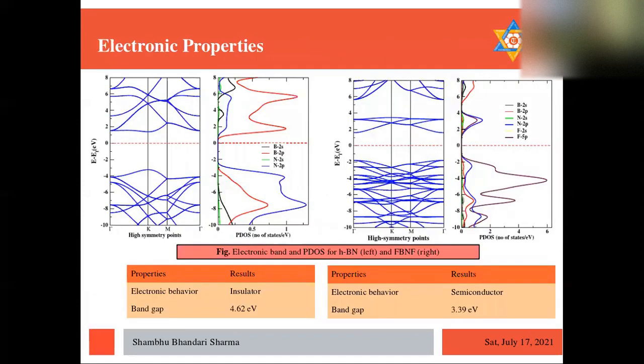And here is now the electronic properties. We can see the band and PDOS side by side here for both monolayers. We can see the electronic behavior of h-BN, which is insulator, is shifted into the semiconductor by reducing the band gap from 4.62 to 3.39 eV as shown by previous report. And we can see there in PDOS on the right, the 2P orbital for F element is playing main role to reduce the band gap for fluorinated structure.